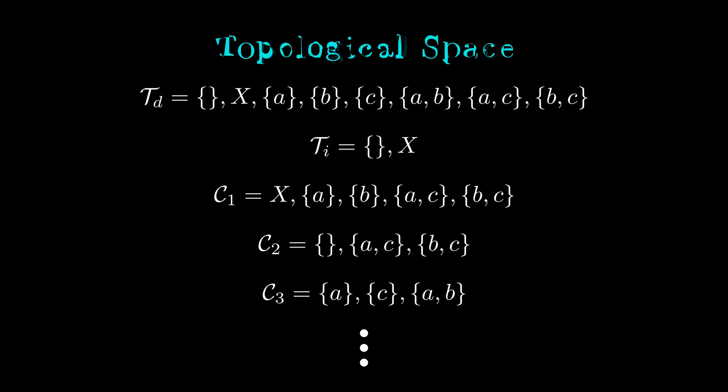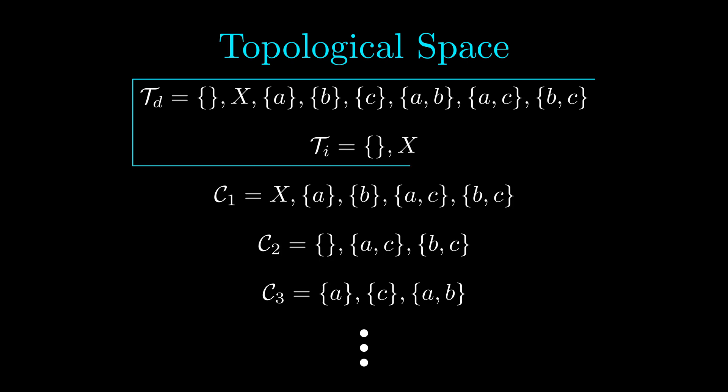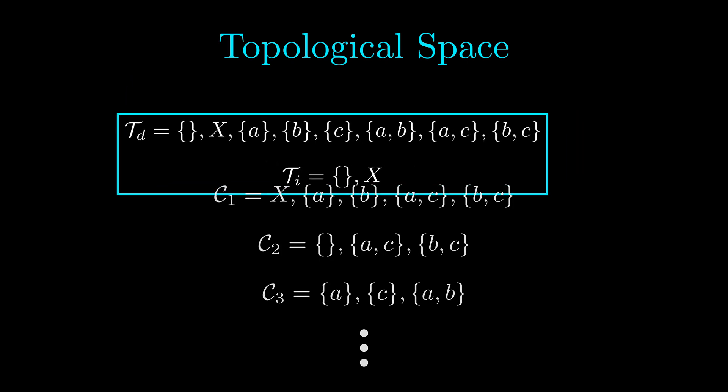What a topological space does is to select only those collections that satisfy three simple criteria. First, the empty set and the whole set must be in the collection. So any collection that excludes one of these will not be part of a topological space.